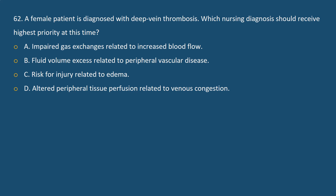Question 62: A female patient is diagnosed with deep vein thrombosis. Which nursing diagnosis should receive highest priority? A) Impaired gas exchange related to increased blood flow, B) Fluid volume excess related to peripheral vascular disease, C) Risk for injury related to edema, D) Altered peripheral tissue perfusion related to venous congestion.